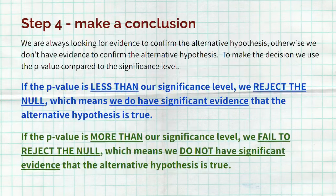Step four is making our conclusion. Compare the p-value to your level of significance. If the p-value is less than the level of significance, reject the null — you have evidence the alternative is true. If the p-value is greater, fail to reject the null; we just don't have enough evidence to go with the alternative. The framework is exactly the same as a one-sample Z test.